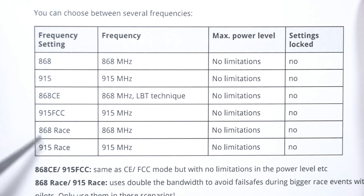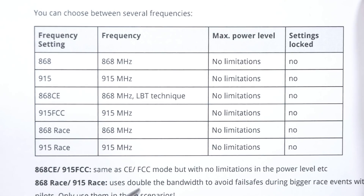Finally, there are 868 Race and 915 Race options. These frequency bands are designed for use in racing environments where dropped packets are particularly undesirable. In these bands, the bandwidth of the system is doubled, which helps avoid fail-safes. You should only use this in race environments — presumably because the range gets a lot shorter, though I don't know that for sure. Why else would they tell you not to use it all the time?